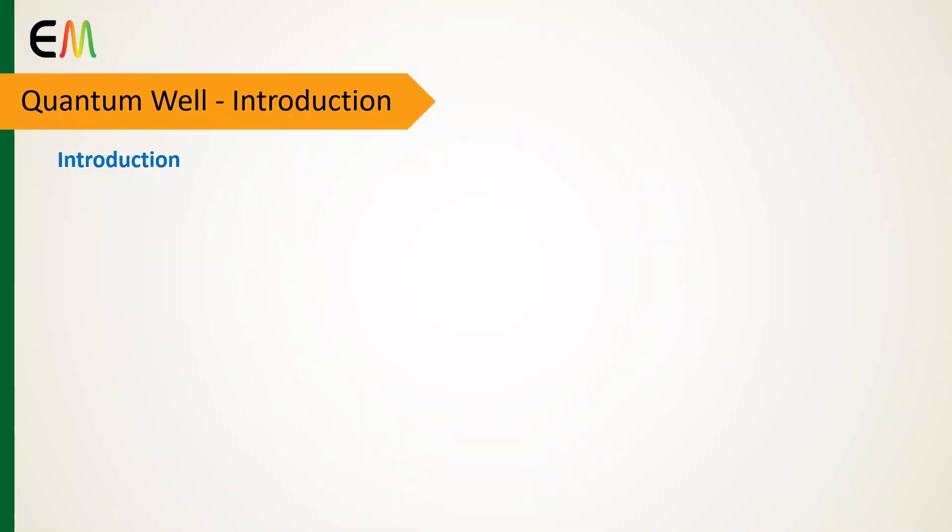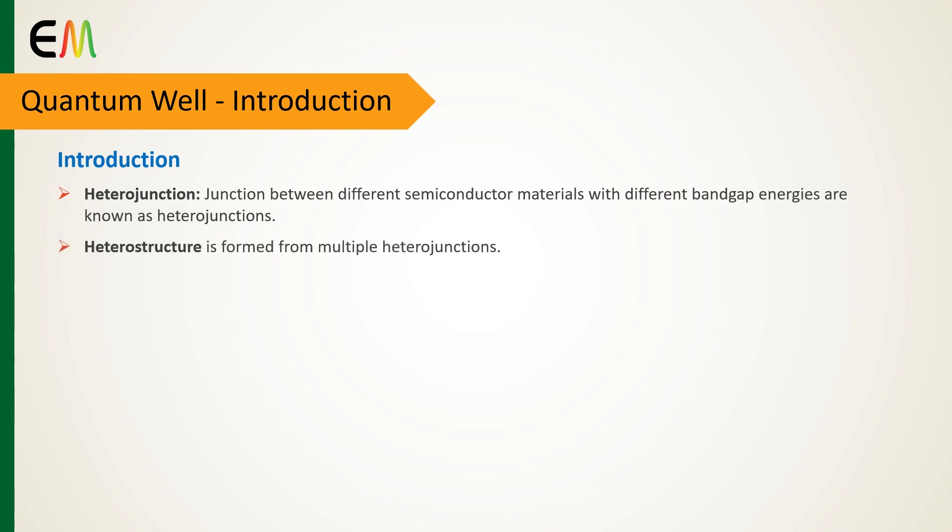At the beginning, heterojunction is defined as the junction between different semiconductor materials with different bandgap energies. Heterostructures are formed from multiple heterojunctions.